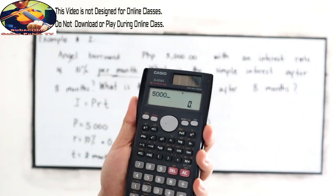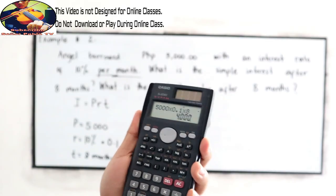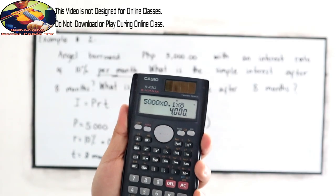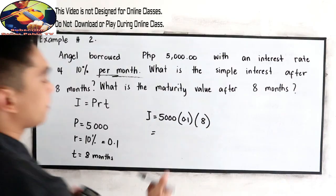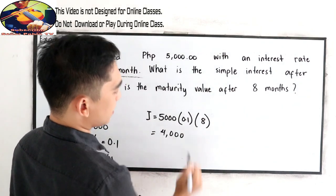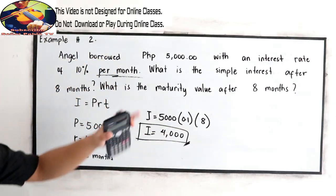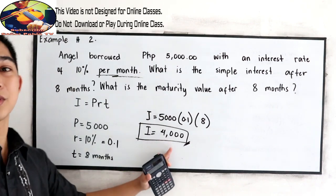5,000 times 0.1 times 8. So 4,000. So the interest after 8 months is 4,000.